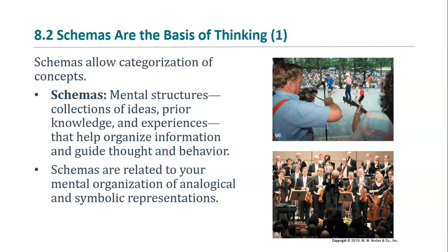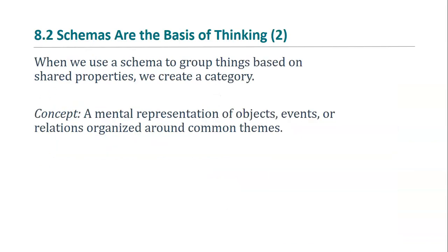All of us organize our mental information through the use of schemas. Schemas are those cognitive structures that help us to perceive, organize, and process information. For example, we may have a schema about music. When we use a schema to group things based on shared properties, we create a category about that information. Concepts are those categories of items with shared properties that are organized around a common theme or schema.